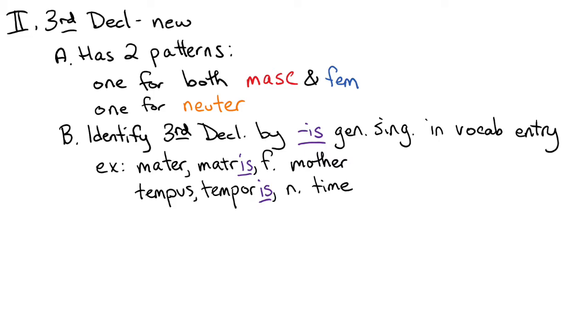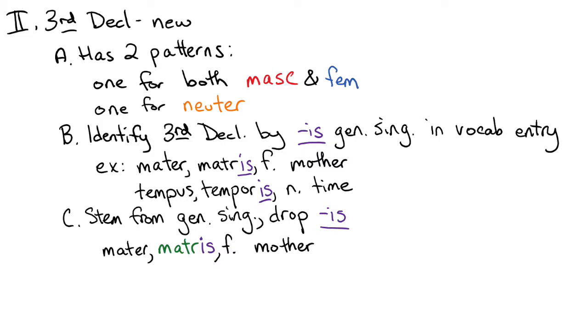Additionally from the genitive singular, we will get the stem after we drop -is. So for the vocab entry mater, matris, feminine, mother, after we drop the -is, the stem is M-A-T-R.